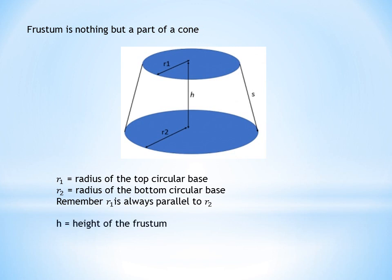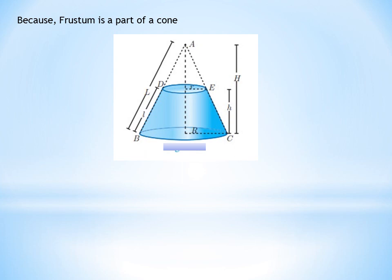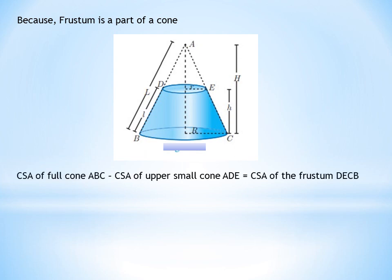H is the height of the frustum. S (or L) is the slant height. Because the frustum is a part of a cone, the curved surface area of the full cone ABC minus the curved surface area of the smaller upper cone ADE gives you the curved surface area of the frustum DECB.